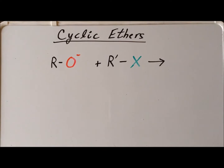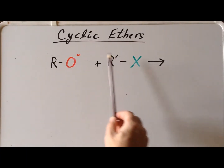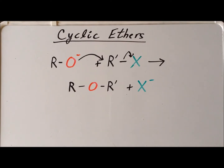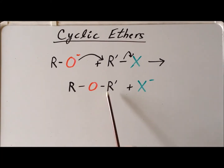Recall that in the intramolecular Williamson synthesis, we have the nucleophilic attack of a nucleophile, which is an alkoxide, on an alkyl halide. We get the product of the ether, R-O-R prime, and the leaving group. Now, in the case where the alkoxide and the halide are in the same molecule, we can have an intramolecular nucleophilic attack, which leads to a cyclic ether.